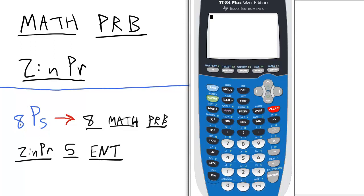Let me show you an example. If we have 8P5, which is a permutation of 8 items taken 5 at a time.